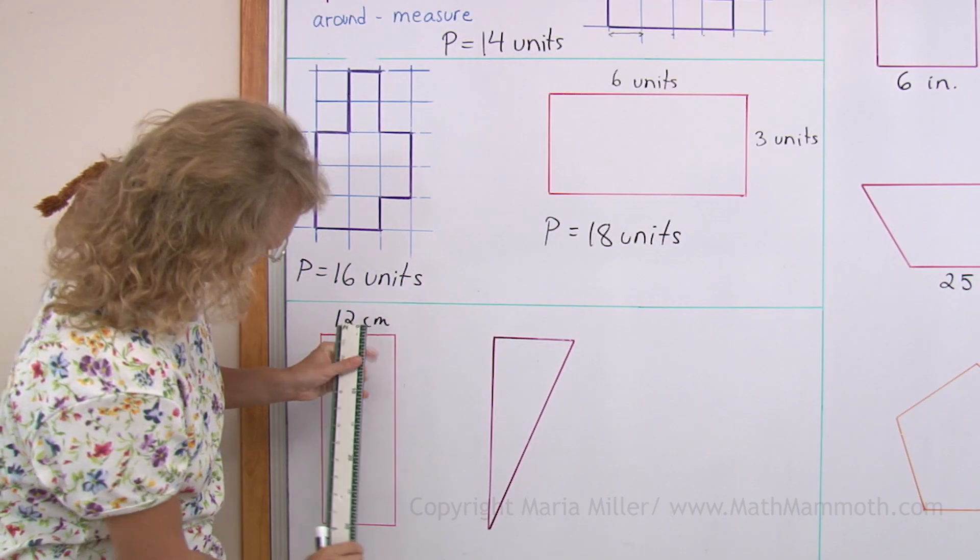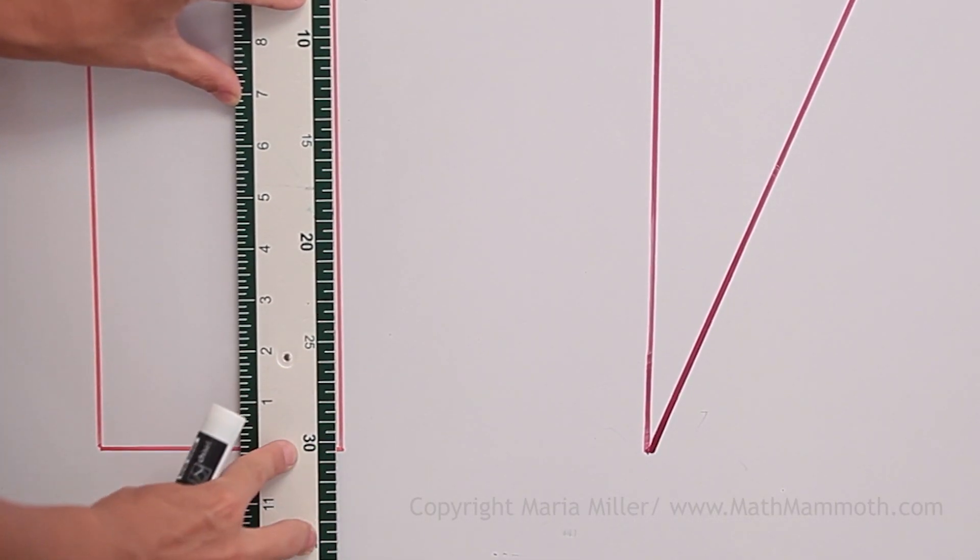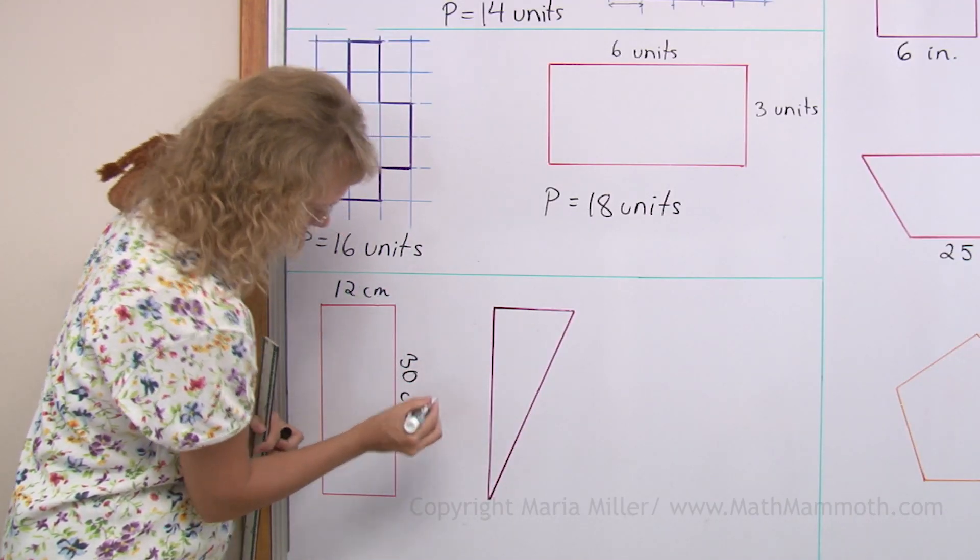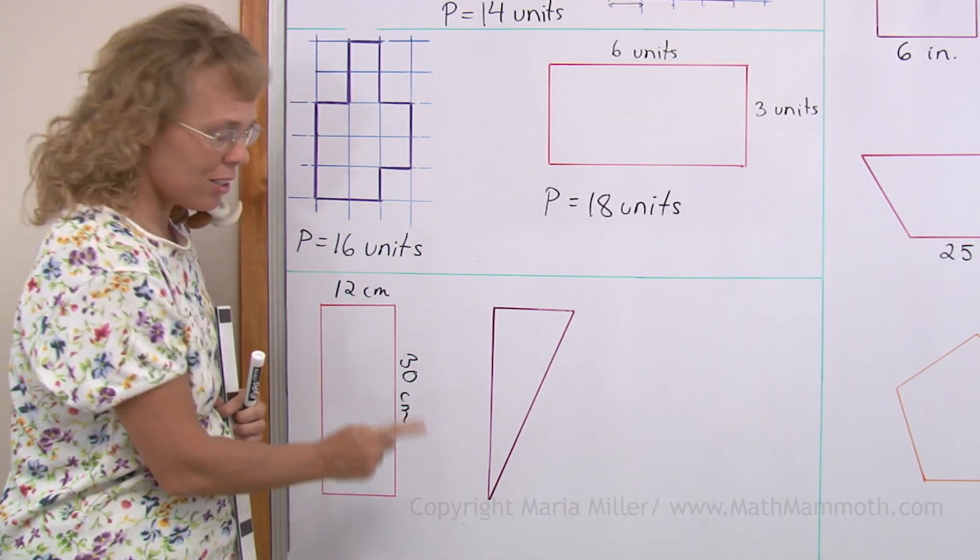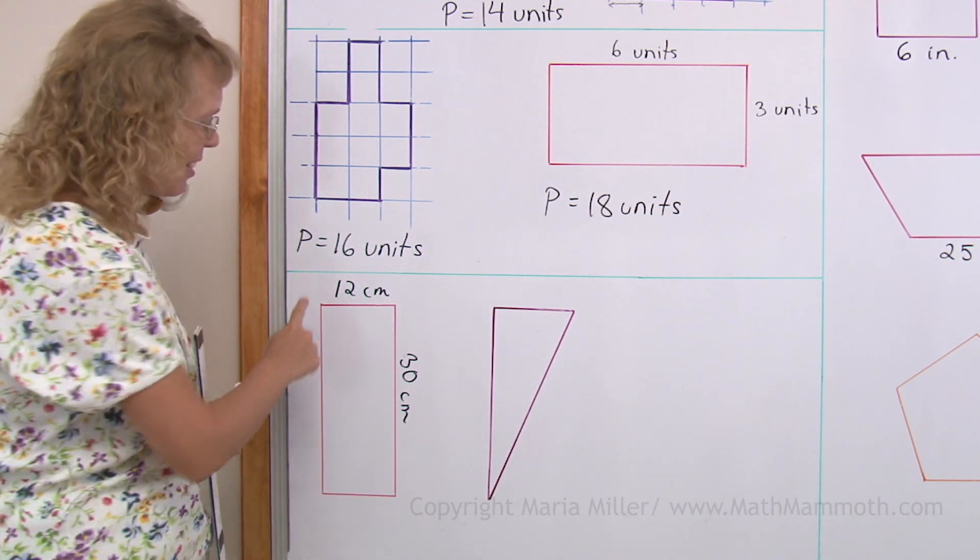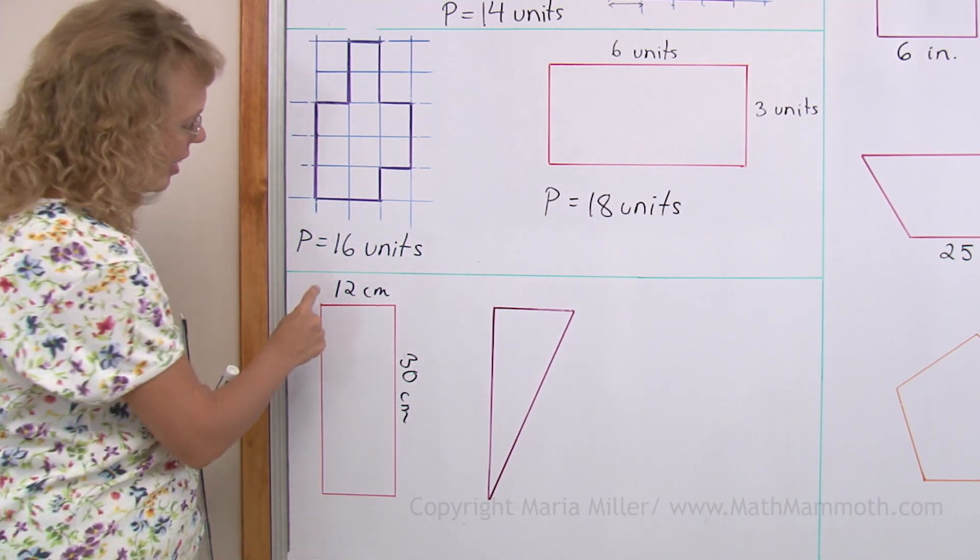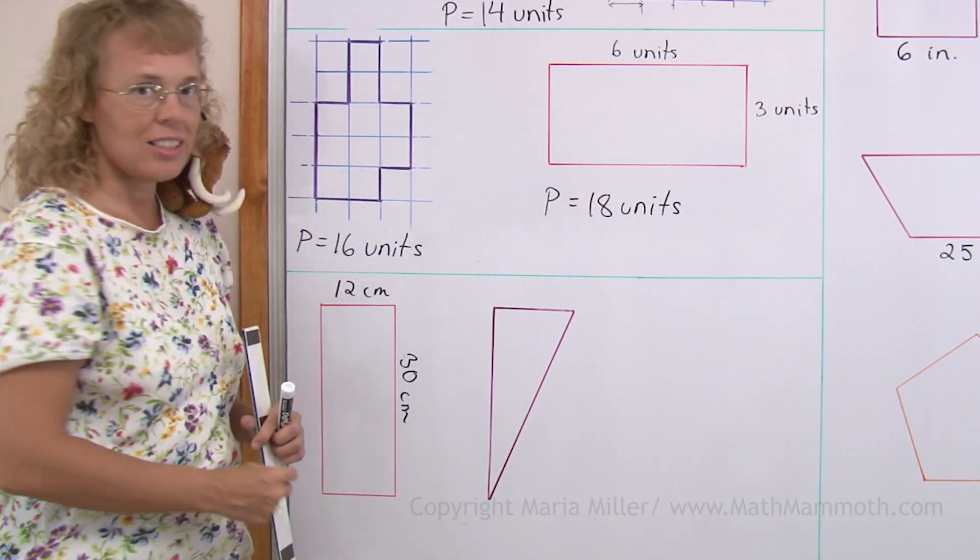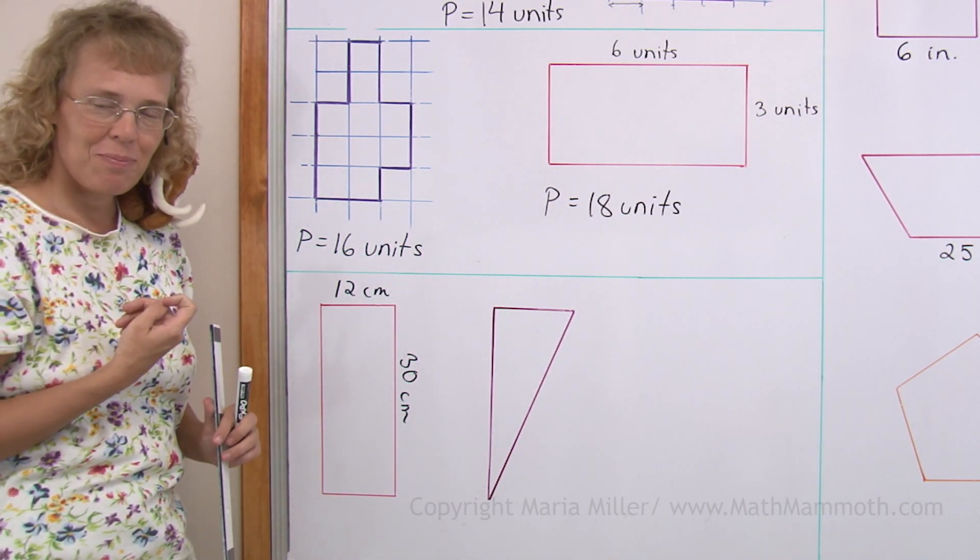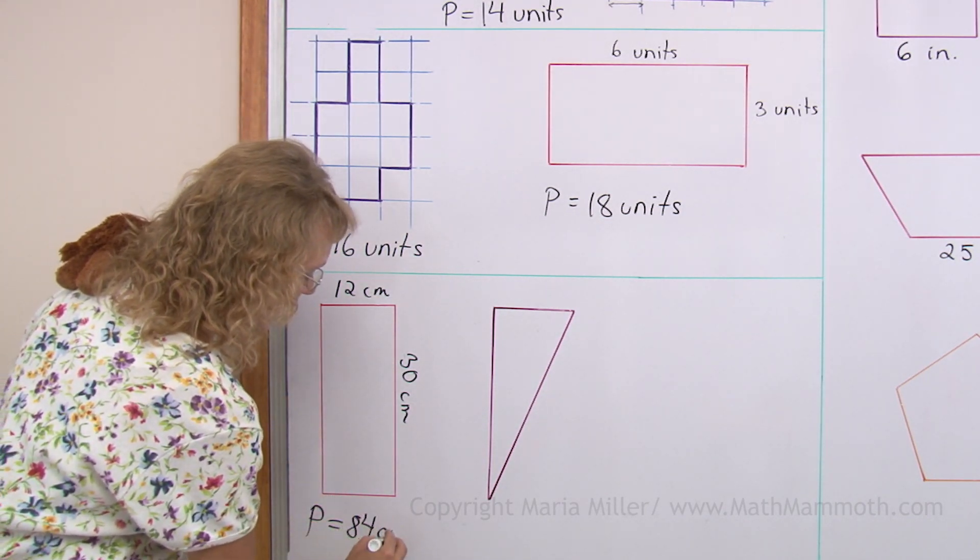And then this other side. Okay. Looks to me that it's thirty centimeters, right? I don't need to measure this or this, because this side is thirty, just like that. And this side is twelve. So now we just add. When you're going around, you need to add all four sides, the side lengths. So twelve and thirty is forty-two. And then these two also make forty-two centimeters. So forty-two and forty-two, eighty-four. The perimeter is eighty-four centimeters.